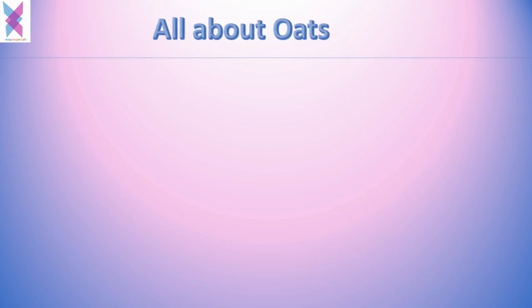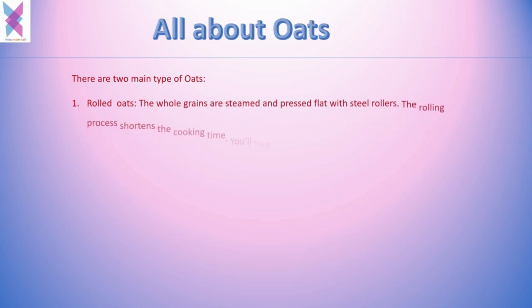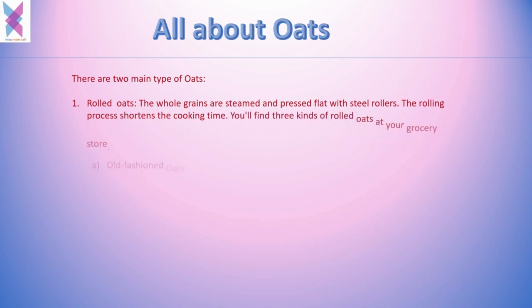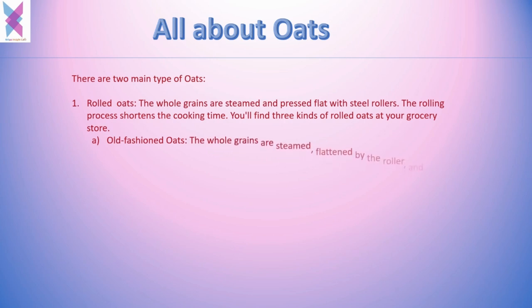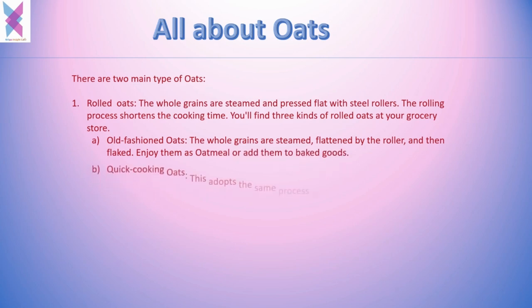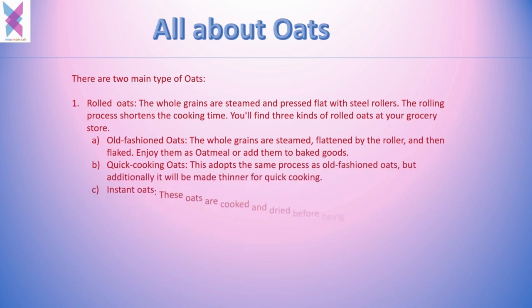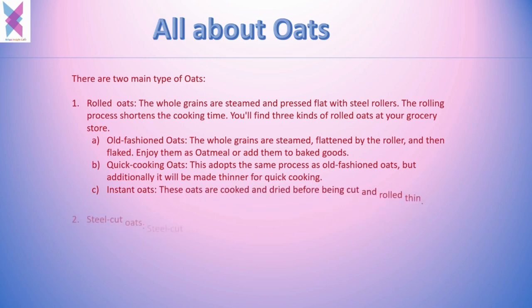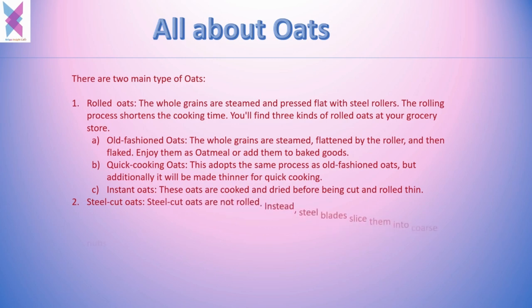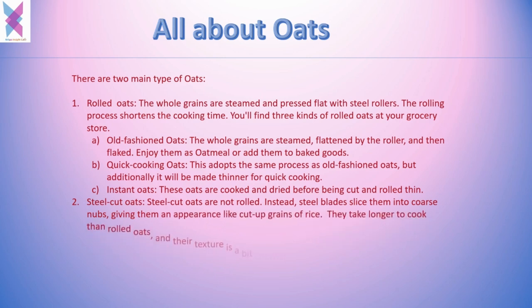There are mainly two types of oats: rolled oats and steel-cut oats. Rolled oats are whole grains which are steamed and pressed flat with steel rollers; the rolling process shortens the cooking time. There are three kinds of rolled oats: old-fashioned oats, which are steamed, flattened by the roller, and then flaked for use in baking; quick-cooking oats, which use a similar process but are made thinner for quick cooking; and instant oats, which are cooked and dried before being cut and rolled thin.